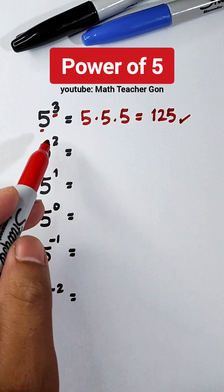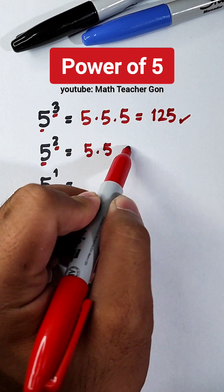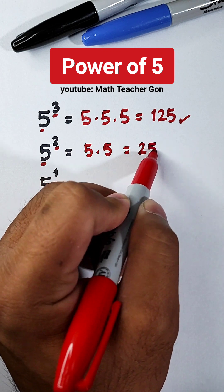Now for this one, 5 squared, this is the base, your exponent is 2, that would be 5 times 5, which is equal to 25.